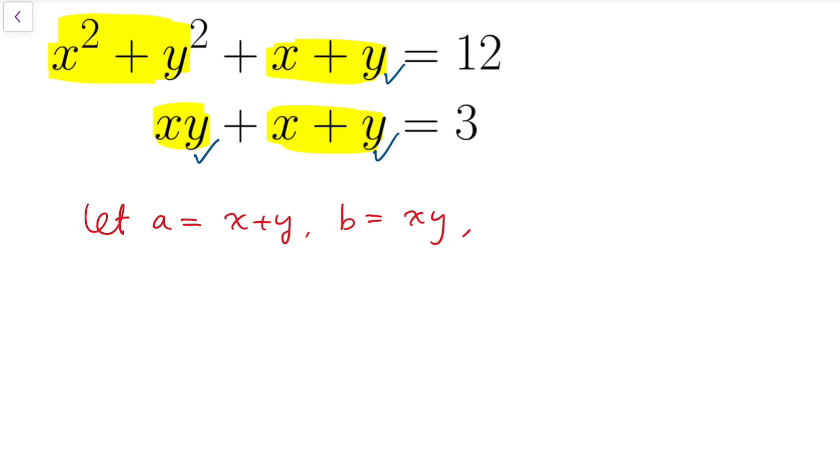So the system becomes a² - 2b + a = 12. And for the other equation, it's simply a + b = 3.